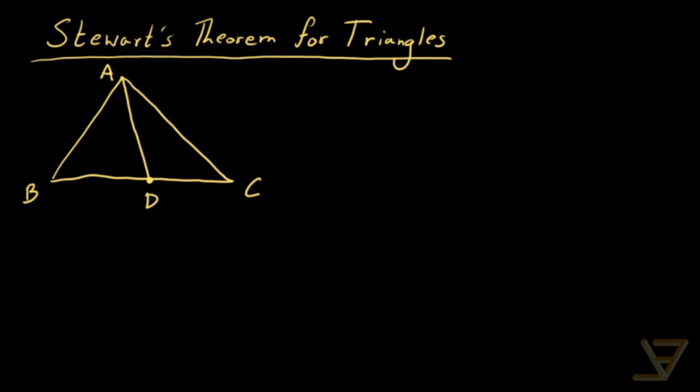And for convenience, we're going to label the points. So this side is going to be b. This side is c. We're going to call the cevian d. This side over here is a. And we're going to call BD m, and we're going to call DC n. So those are the six line segments that we're going to be dealing with.